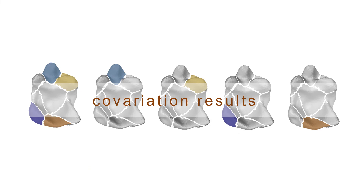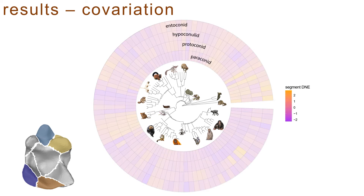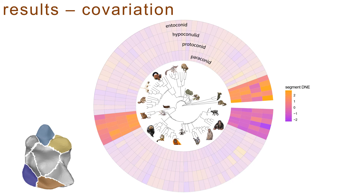Following our analysis of the paraconid, we quantified three more segments that encompass cusps: the protoconid, the entoconid, and the hypoconulid. We wanted to know if a tooth had a segment with high DNE, whether all the other segments on that tooth were also highly curved, or if regional curvature was independent of other parts of the occlusal surface. We found that some groups had high curvature or large cusps across the board — like the scandentians within the outgroup mammals or the tarsiers within euprimates — while taxonomic groups like the catarrhines had low relief across all segments. However, some taxa had single segments with high DNE, like the indriid lemurs and the high DNE values of their entoconid region.